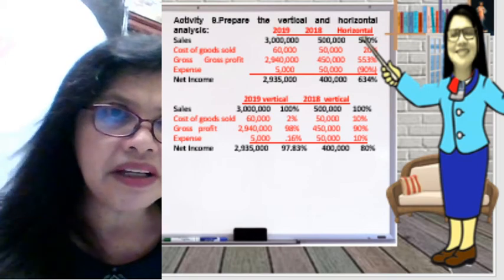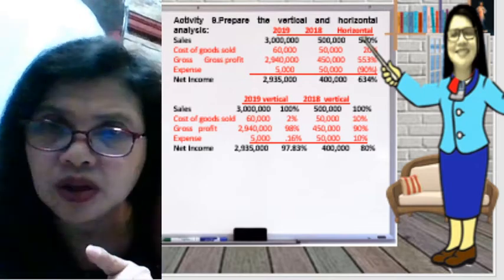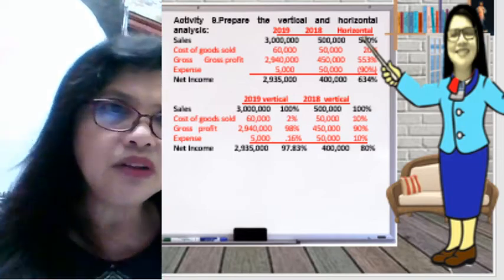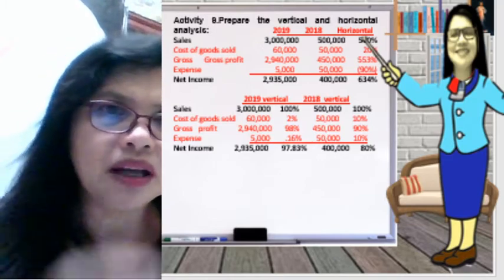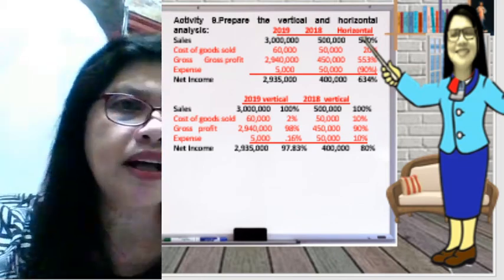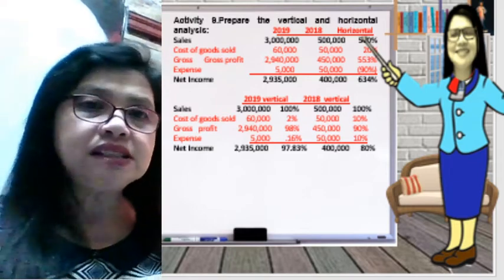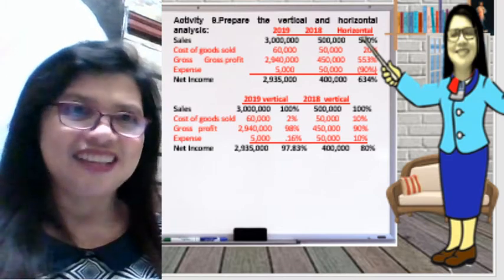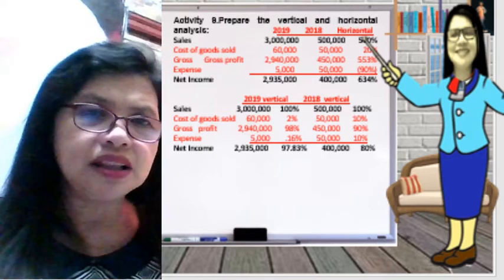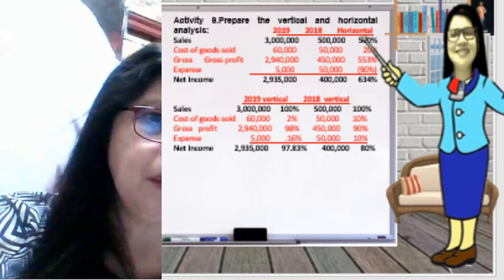The cost of goods sold also increased: 60,000 minus 50,000 divided by 50,000 gives approximately 20% increase. The gross profit: 2,940,000 minus 450,000 divided by 450,000 gives a 553% increase in gross profit. The expense account: 5,000 minus 50,000 divided by 50,000 gives a decrease of about 90%.